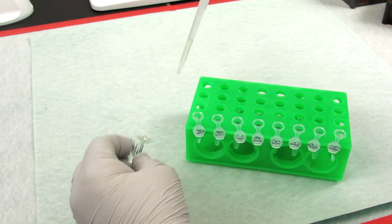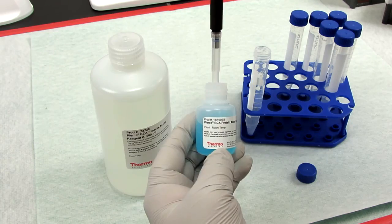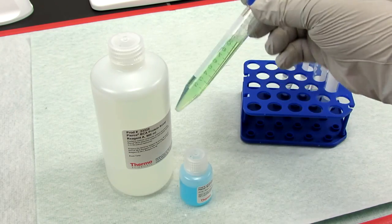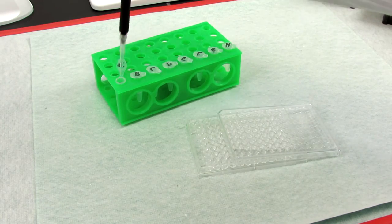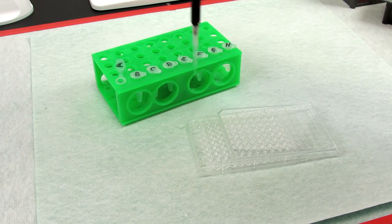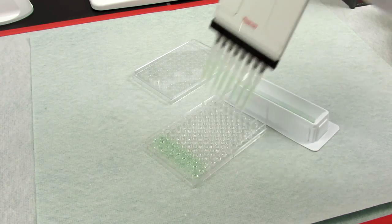After diluting the BSA standard, prepare the BCA working reagent by combining reagents A and B at a 50 to 1 ratio, and pipette 25 microliters of each standard or sample into a microplate well, followed by 200 microliters of the BCA working reagent.